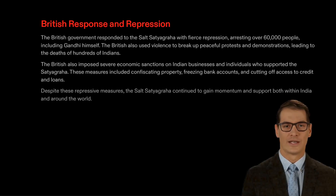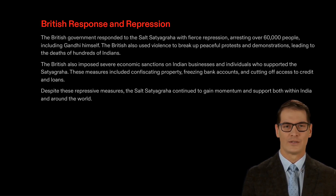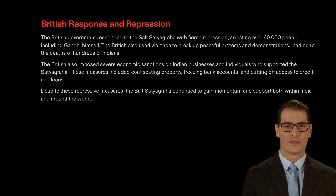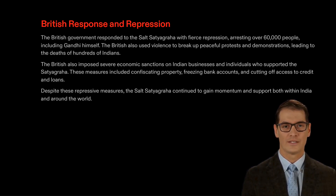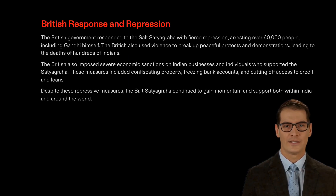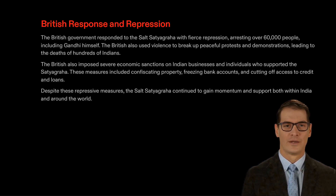The Salt Satyagraha, led by Mahatma Gandhi, was met with fierce repression by the British government. Thousands were arrested, including Gandhi himself, and hundreds were killed as peaceful protests were broken up by violence. In addition to this, the British imposed economic sanctions on those who supported the Satyagraha, including confiscating property, freezing bank accounts, and cutting off access to credit and loans. Despite these measures, the Satyagraha continued to gain momentum and support both inside and outside India.